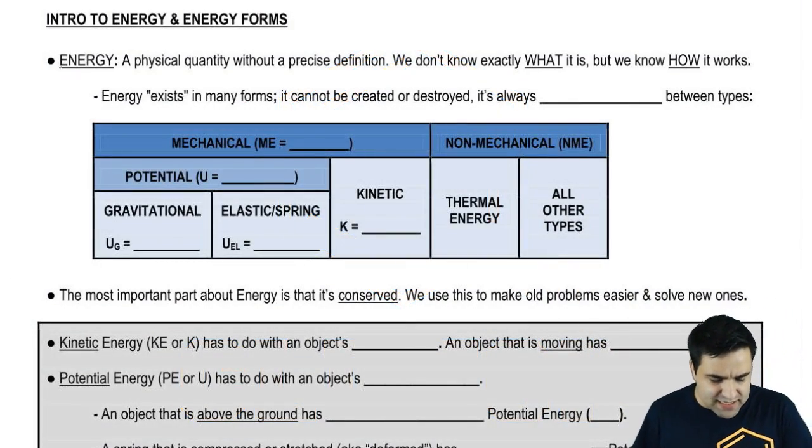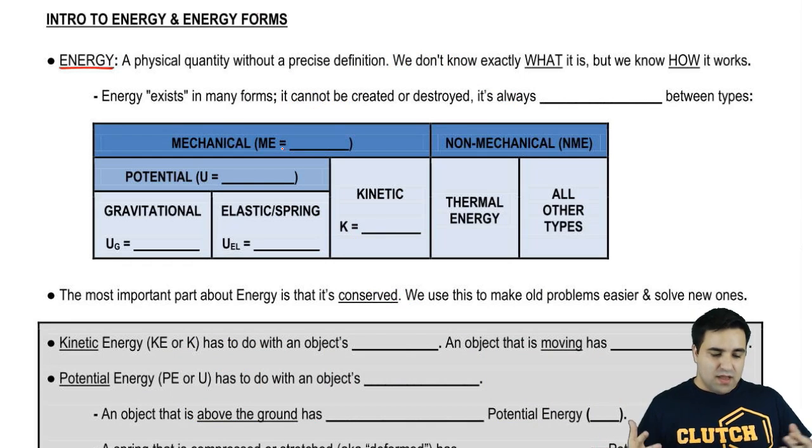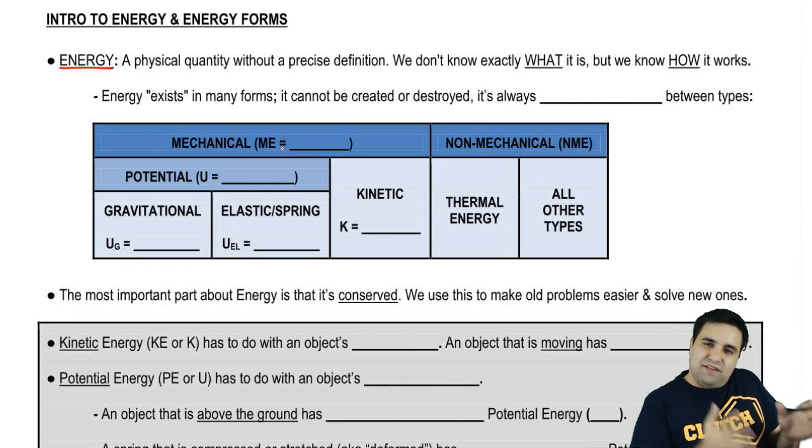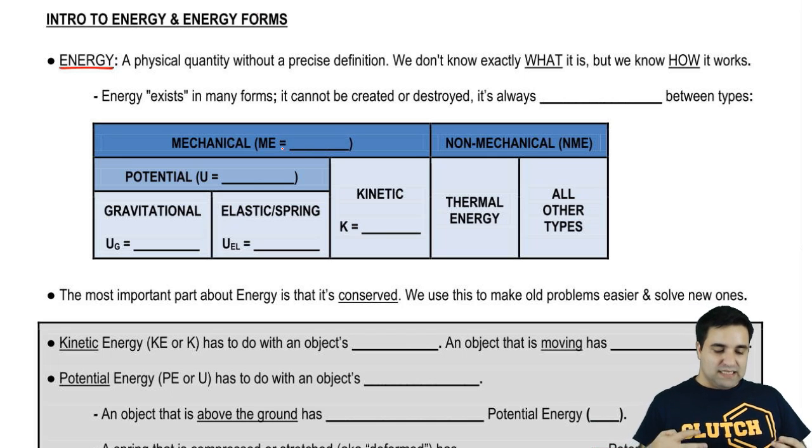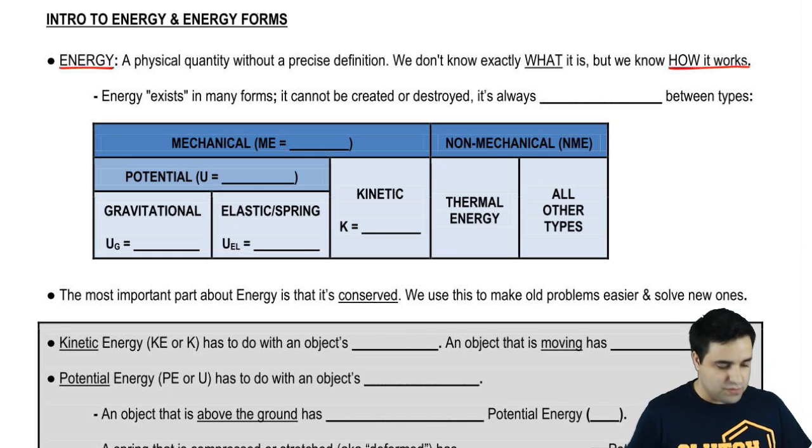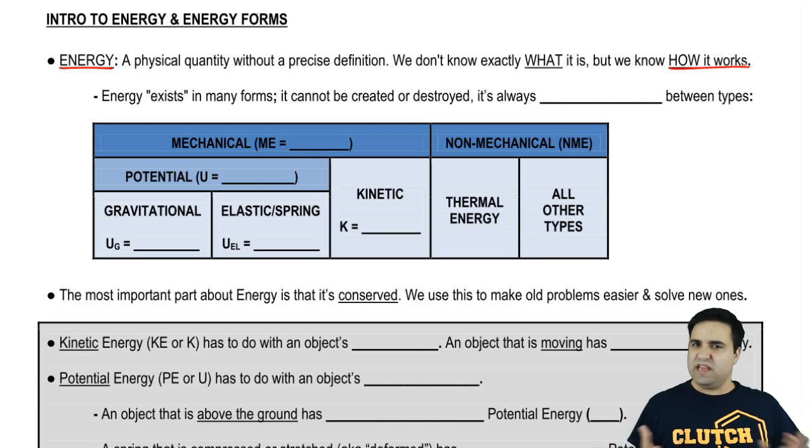Alright, so energy is a physical quantity without a precise definition. If you read through a textbook, it most likely says something about the difficulty in explaining exactly what energy is. We don't know exactly what it is, and we don't know exactly why things work the way they do, but we know how it works. There's a bunch of definitions, and they're all kind of weak. I don't really like any of them, but it doesn't matter.